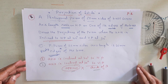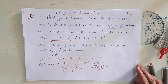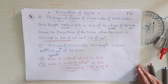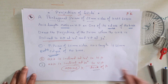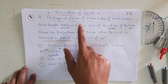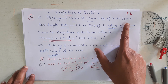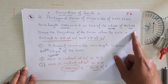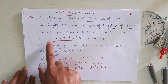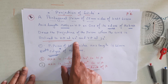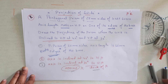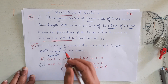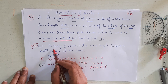Hello friends, namaste. Today we are going to solve another problem on projection of solids. A pentagonal prism of 25 mm sides of base and 60 mm axis length rests on HP on one of its edges of the base. Draw the projection of the prism when the axis is inclined to HP at 40 degrees and VP at 30 degrees.